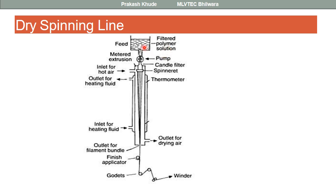The basic components of dry spinning systems are: a pump, a candle filter, hot air supply for evaporation of the solvent, spin finish application, and finally the winding unit.